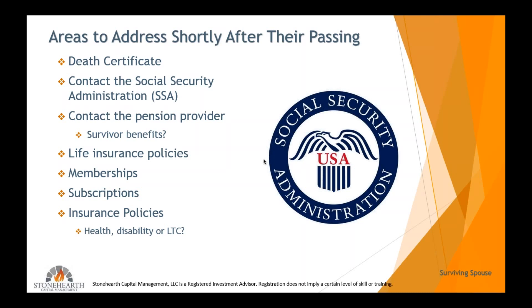Other areas include memberships — such as the gym — and subscriptions like magazines. You'll just want to call and cancel those things. Insurance policies usually include health insurance; contacting Social Security will often take care of Medicare. If you have a supplement, you may need to call the supplement provider separately. Also cancel disability benefits and long-term care premium payments for the decedent.